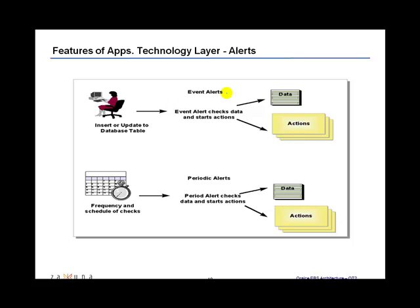With an event alert, an insert or an update to the database table raises the alert and a particular action happens. With a periodic alert, it is based on a frequency — a scheduled task kicks off and sends that information.